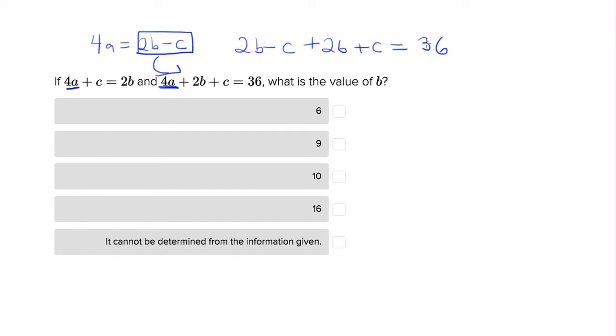And this worked out great because we cancel out our a by substituting it with 2b minus c, but we can also cancel out c since we have minus c here and plus c over here.